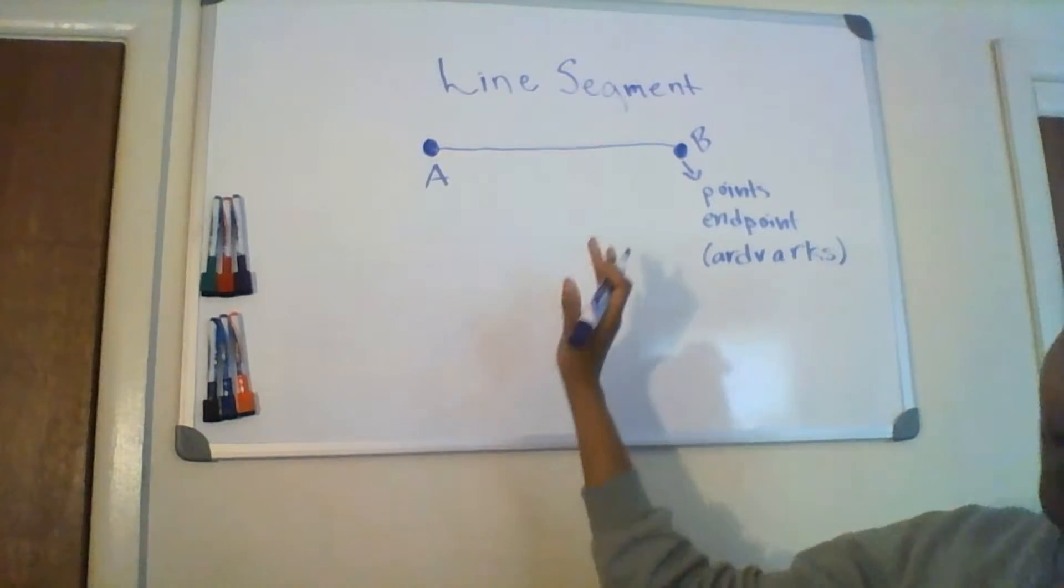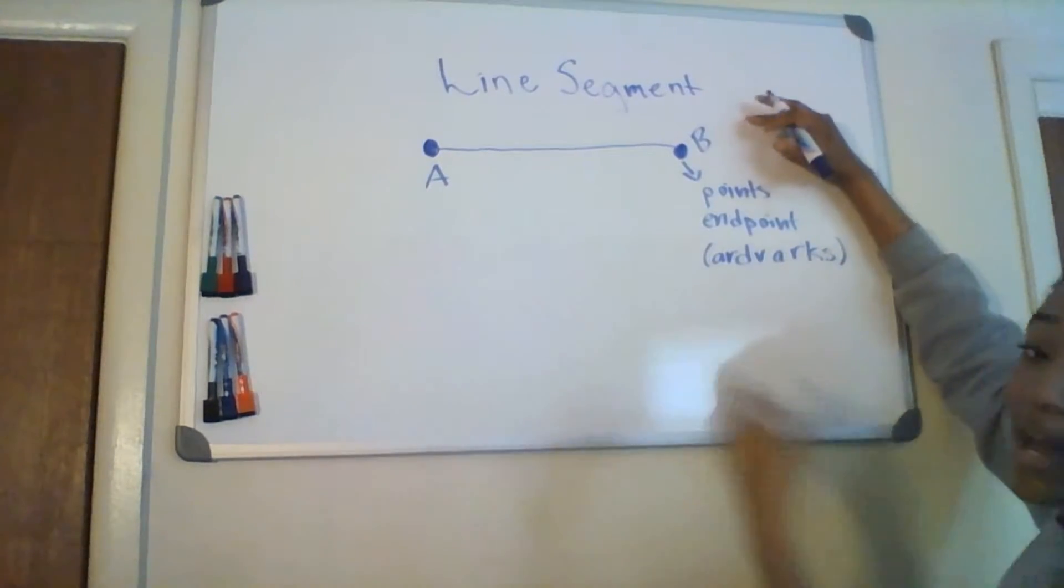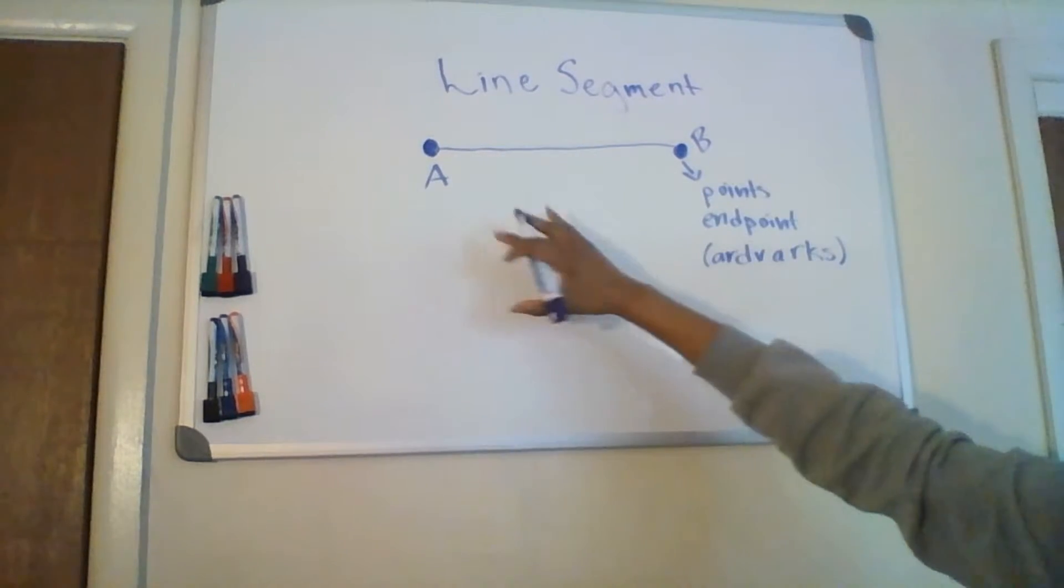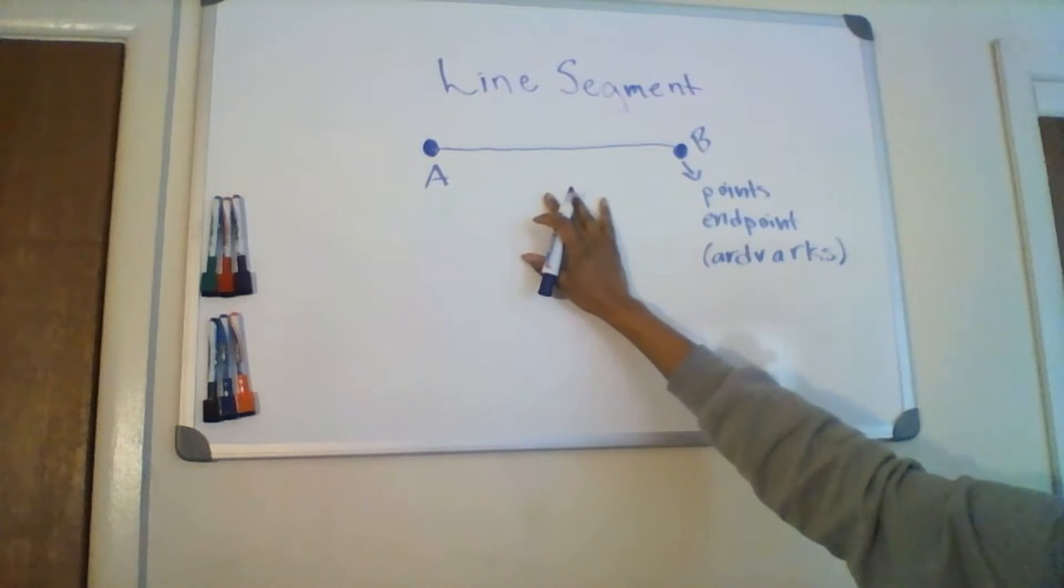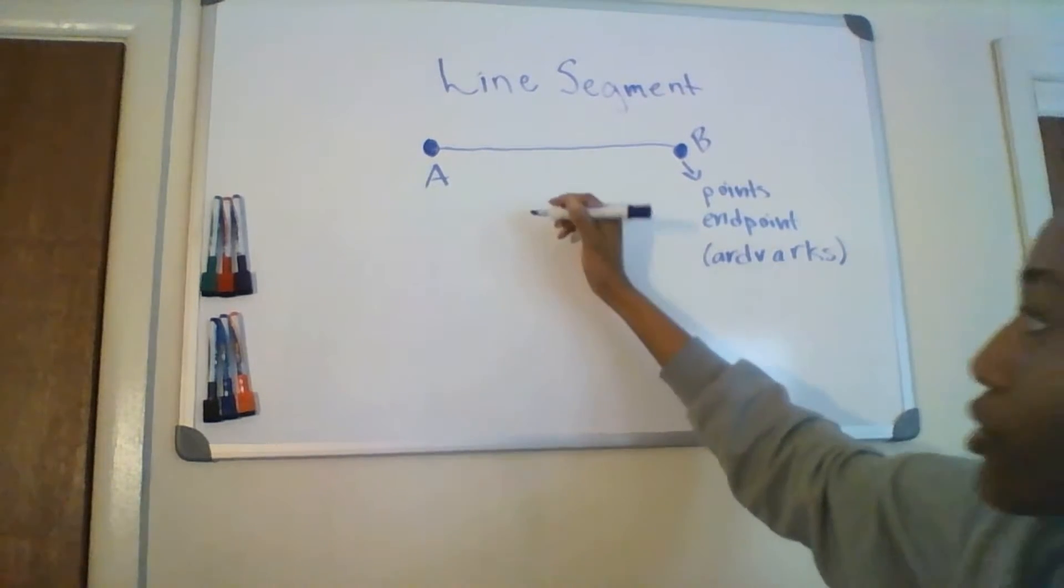This is how you identify and label a line segment by its points, but now if you're writing out and referring to this line segment in some type of mathematical sentence on a test or an exam, the way you would go about doing that is like so.